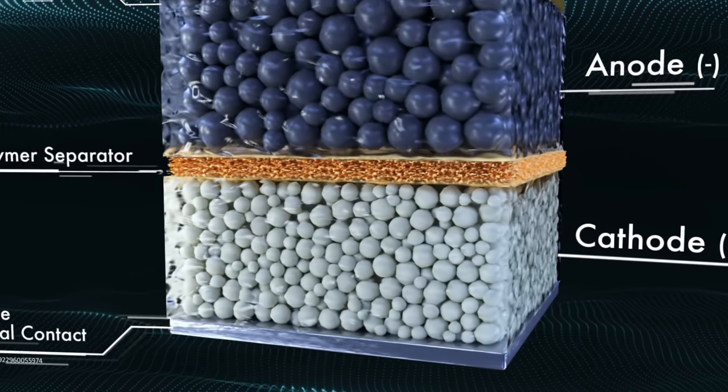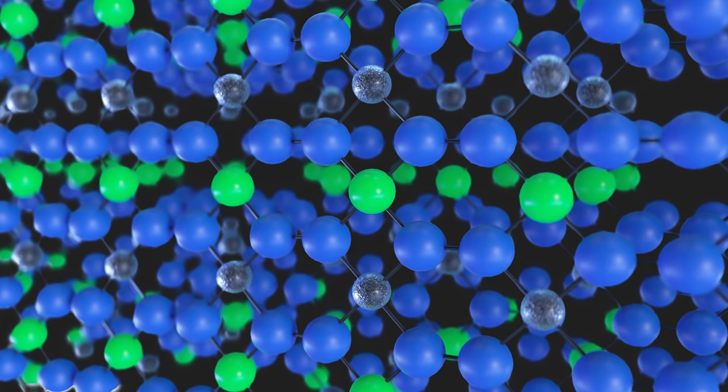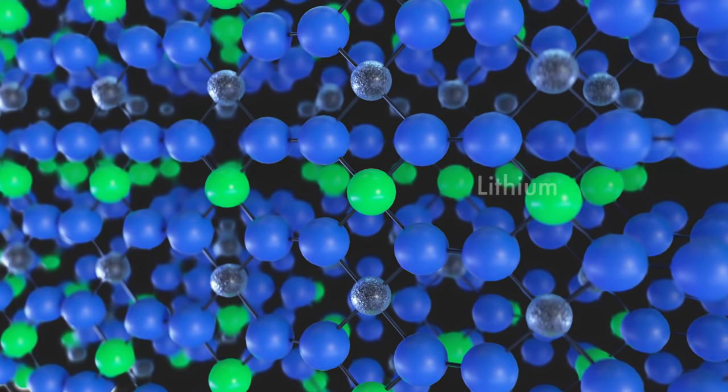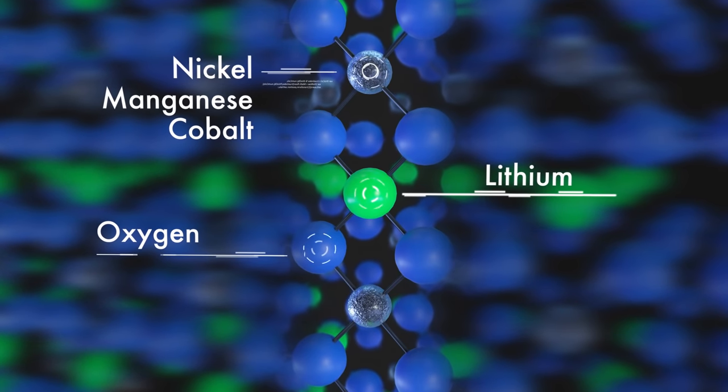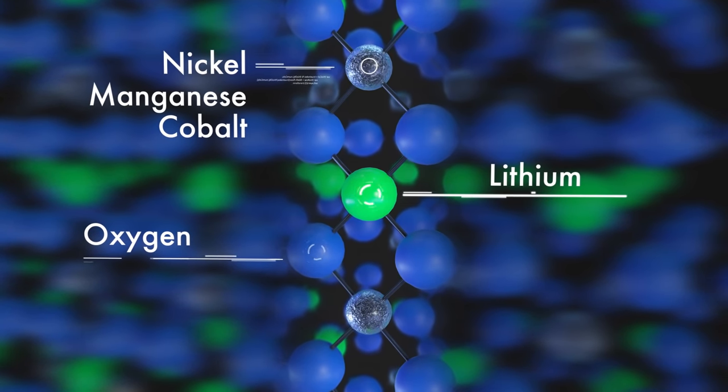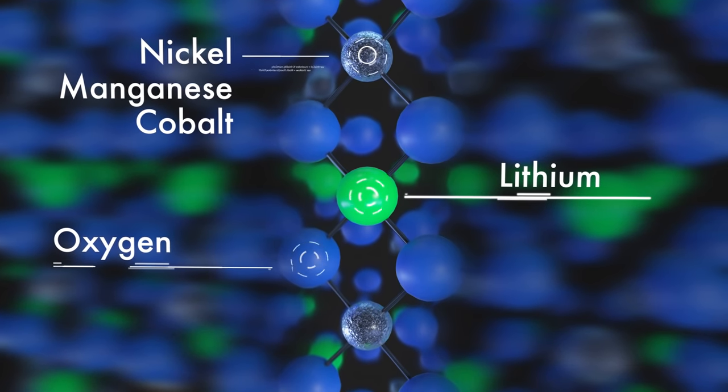Let's zoom in to look at what happens inside the cathode electrode particles. Each cathode particle is made up of a lithium containing metal oxide, such as lithium nickel manganese cobalt oxide, commonly known as NMC. These elements form a stable structure to hold the lithium ions when the battery is in a discharged state.